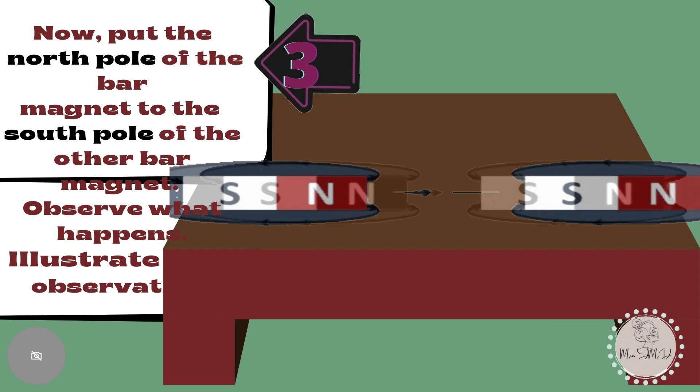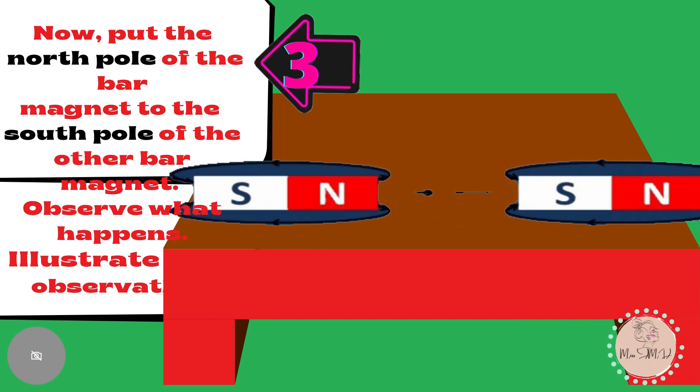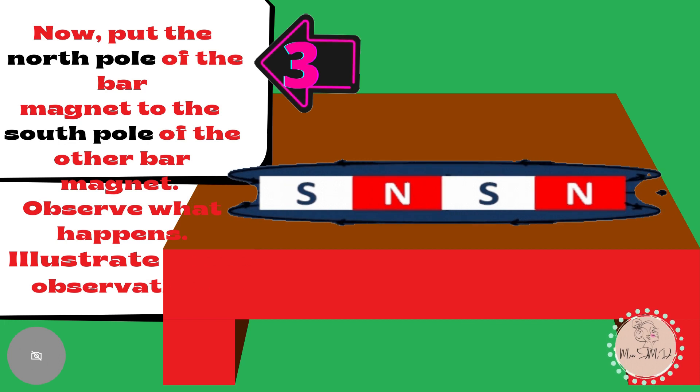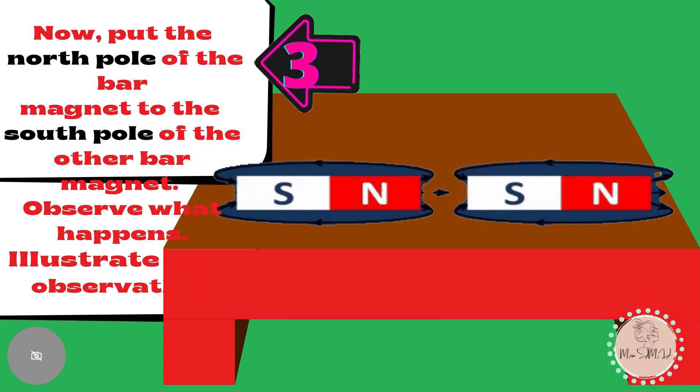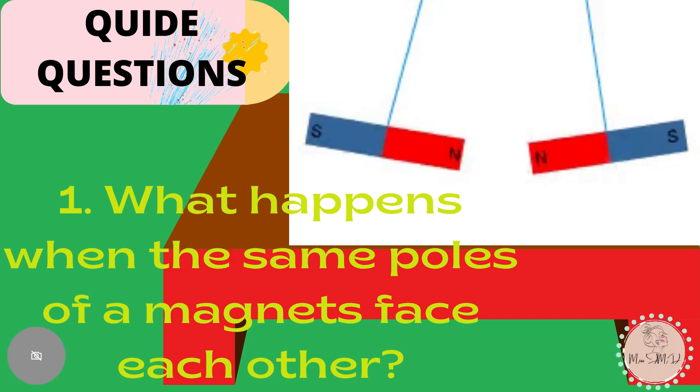Now, put the north pole of the bar magnet to the south pole of the other bar magnet. Observe what happens. Illustrate your observation. Here are the guide questions. What happens when the same poles of a magnet face each other?